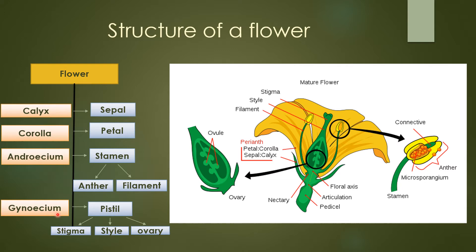The next whorl is the gynoecium, which is the female part, and its unit is the pistil. Each pistil has three parts: stigma, style, and ovary. The stigma is at the top, the style is below it, and at the base the bulky region is the ovary. Inside the ovary there are many ovules.